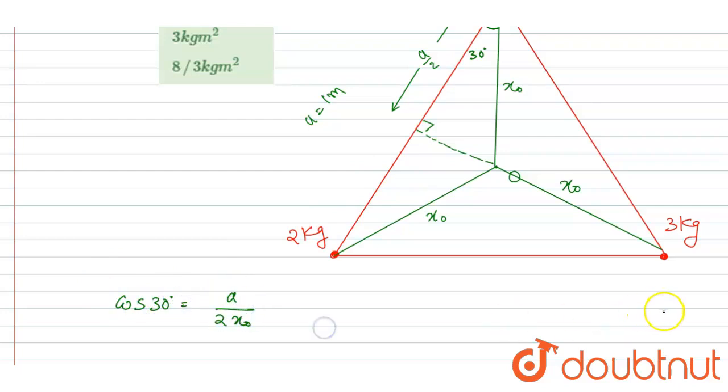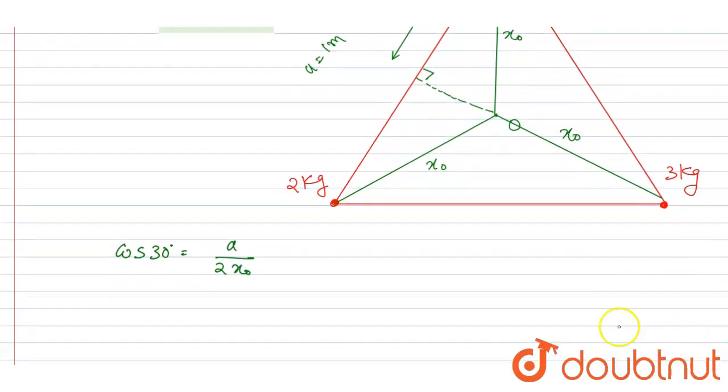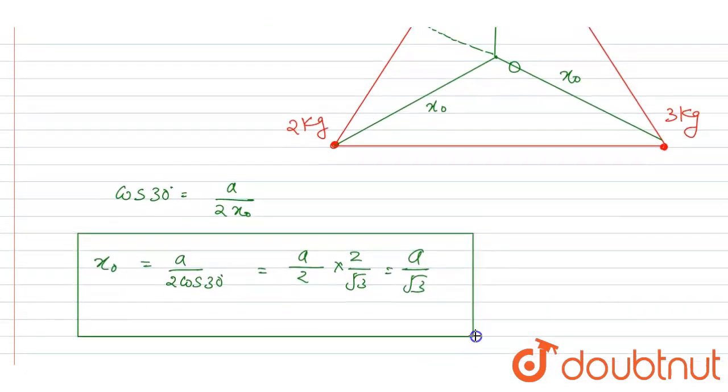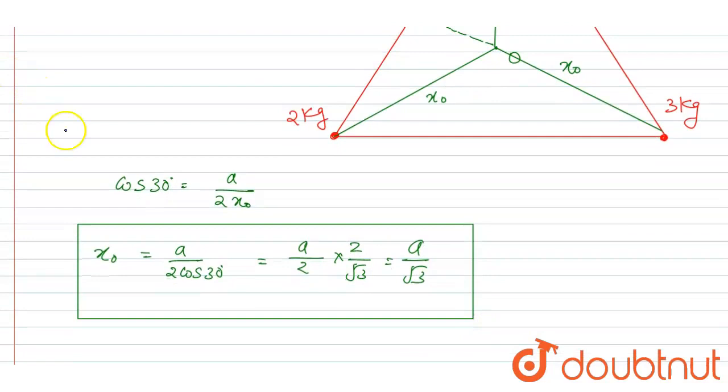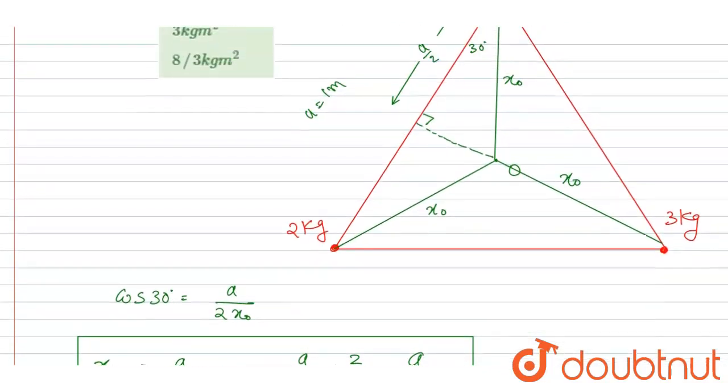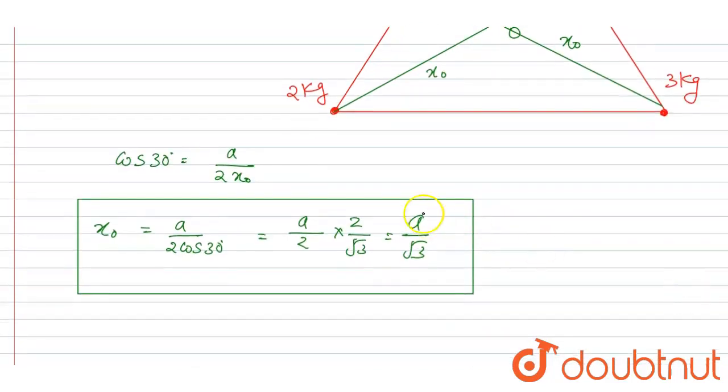...x_naught. And we want x_naught, so I will write x_naught is a/(2 cos 30). So cos 30 is √3/2, so putting the value it will be a/√3. And we got the distance x_naught is equal to a/√3, and a is 1 here, so it will be 1/√3.